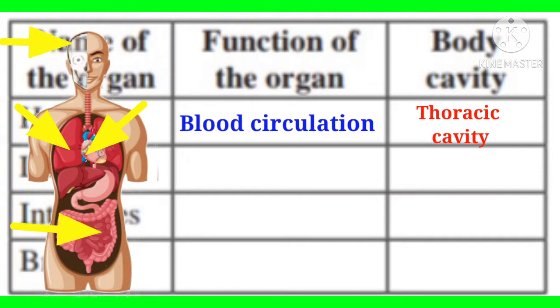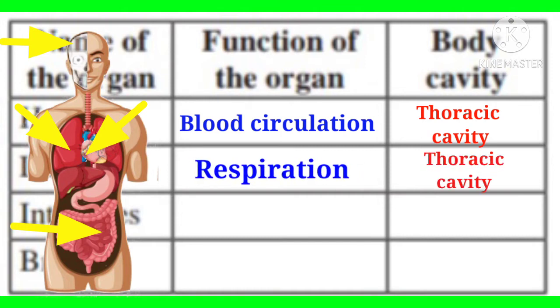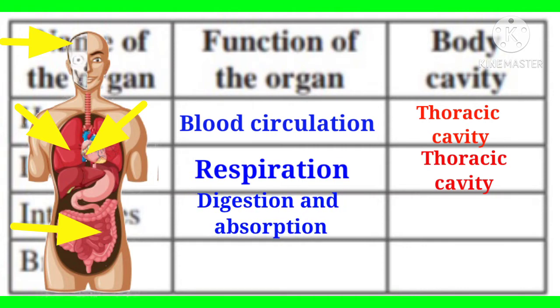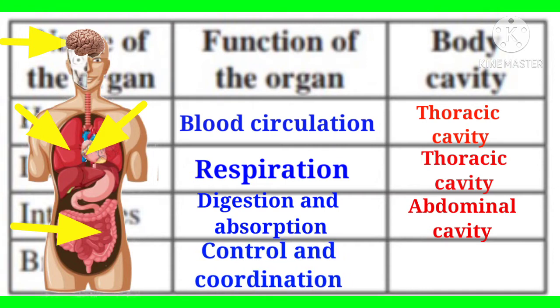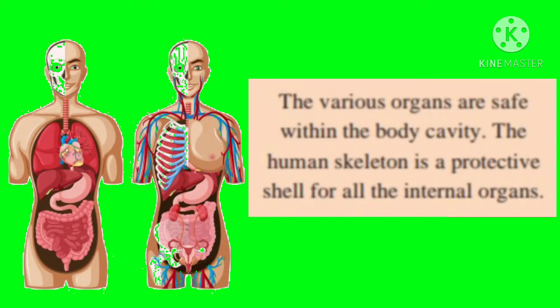The second organ is the lungs; their function is respiration, and they are also located in the thoracic cavity. The third organ is the intestines; their function is digestion and absorption, and they are located in the abdominal cavity. The fourth organ is the brain; its function is control and coordination, and it is located in the cranial cavity. The various organs are safe within the body cavity, and the human skeleton is a protective shell for all the internal organs.